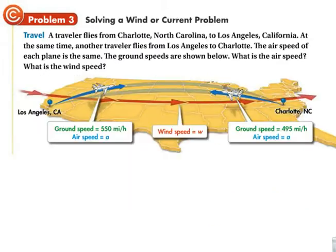Travel problems. Notice that we've got a headwind. This plane is going into the wind, and this plane is going against it. So what we see here is that this plane is traveling at 550 miles per hour, and its airspeed is some value, but it's being helped by the wind. So we're going to have A plus W equal to 550.